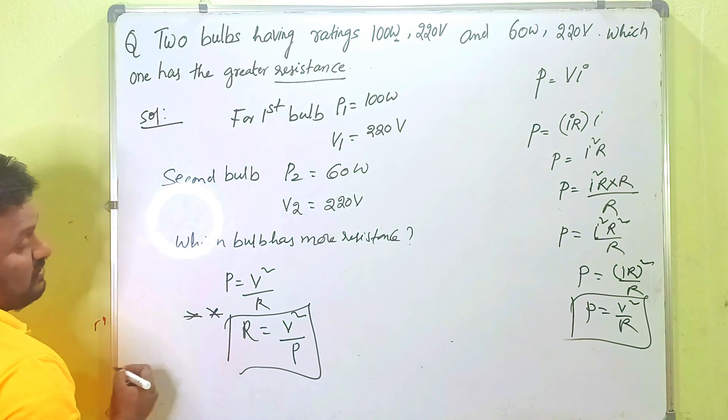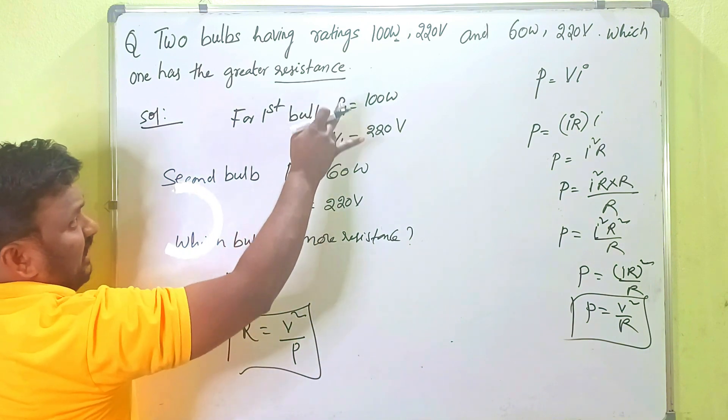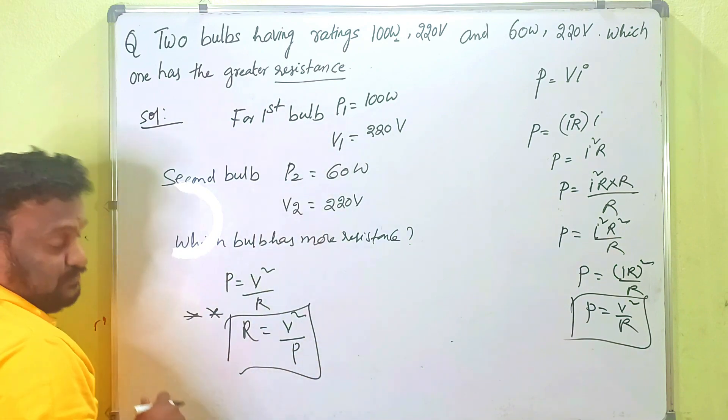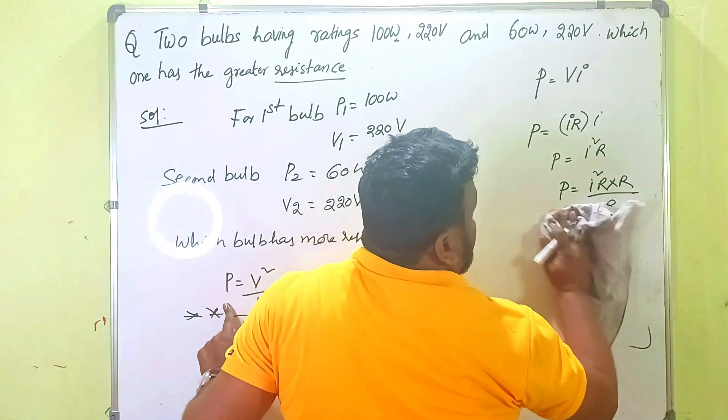This is the formula we are going to use here. P is equal to V square by R. And R is equals what? You know, V square by P. R is equals to V square by P. This is the formula we are going to use in this one. Already we have power and voltage values are there. You have to substitute it.